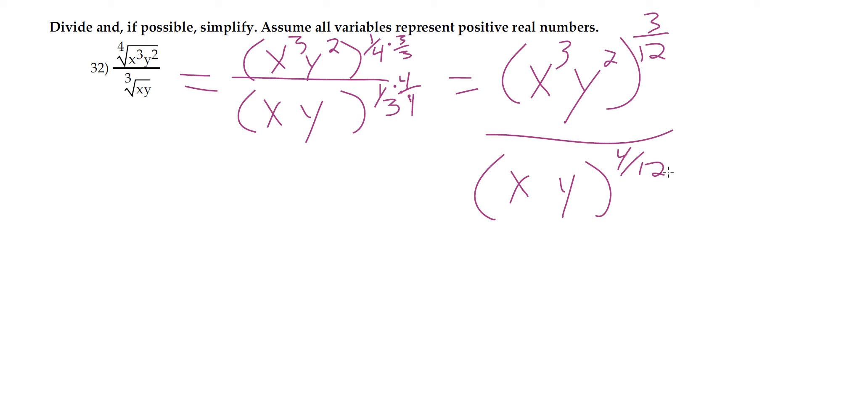Since it's all twelfths powers now, now we can use the quotient rule and write it all as a twelfth root. We couldn't use the quotient rule before because they were different indices, but now they're all twelfths roots.